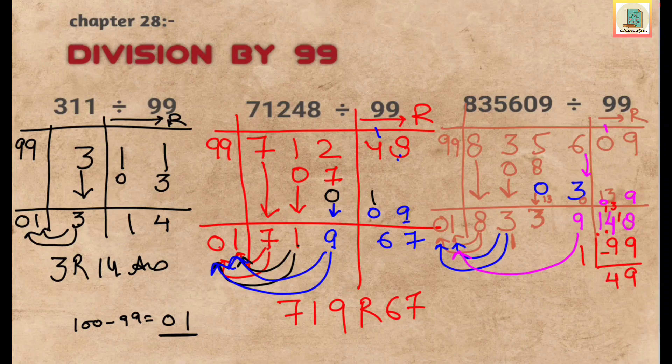So 49 is the remainder and now calculate the answer. 9 plus 1 gives us 10. Here 1 plus 3 gives us 4. 3 plus 1 again gives us 4 and 8. So the final answer is 8440 and the remainder is 49.